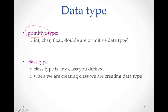Next is class type. Class type means any class you define — this is a user-defined data type. When we are creating a class, we are creating a data type. So if the class name is 'abc' and in void main we create object p, then p is a variable of type class, just as 'a' is a variable of type integer for built-in.